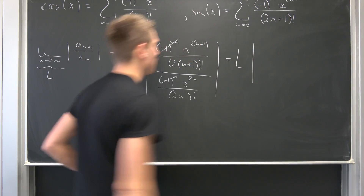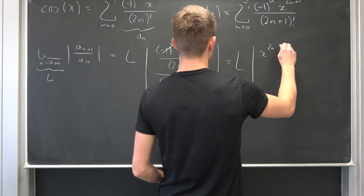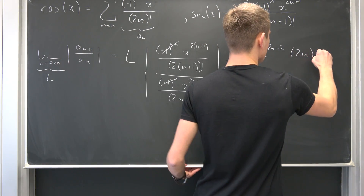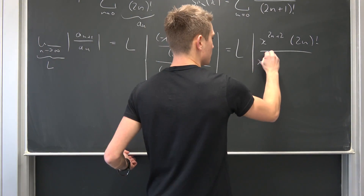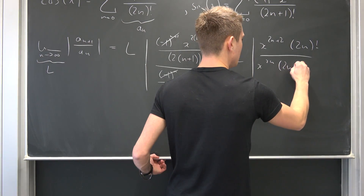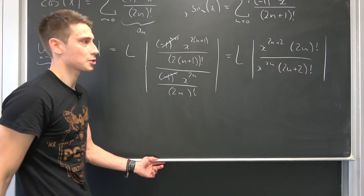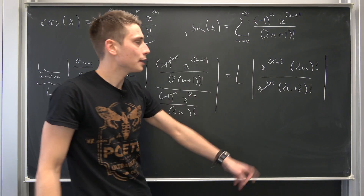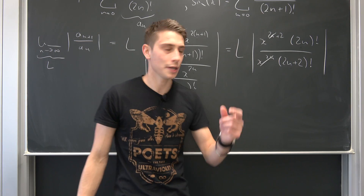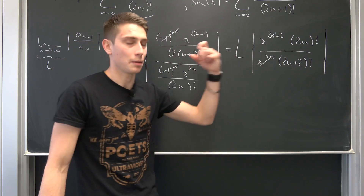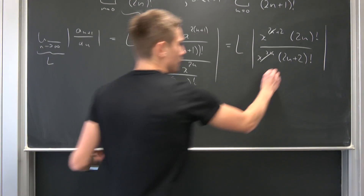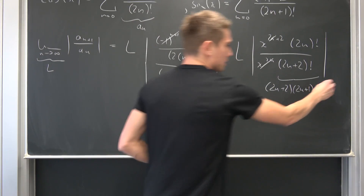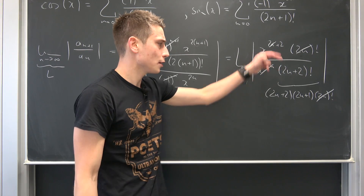We end up with the limit of the absolute value of x to the (2n+2) times (2n) factorial over x to the (2n) power times (2n+2) factorial. The x to the 2n power cancels out, leaving x squared up top. And (2n+2) factorial is nothing but (2n+2) times (2n+1) times (2n) factorial, so that (2n) factorial cancels too, leaving x squared over (2n+2) times (2n+1).